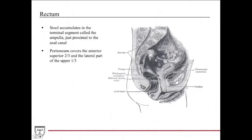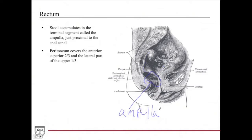Stool accumulates in the terminal segment of the rectum, called the ampulla, in this region here. Another thing to point out is the peritoneum covers the anterior superior two-thirds, and it also covers the lateral part of the upper one-third of the rectum.